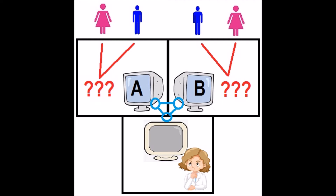the only way the interrogator can discover the true gender of the participants is by typing out questions on the computer and using the responses of the participants to determine what their actual gender is. And the goal of the participants is to convince the interrogator of their actual gender.